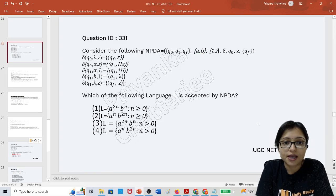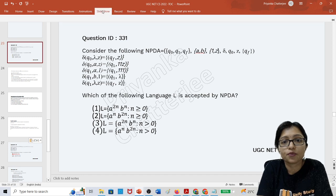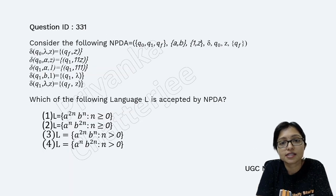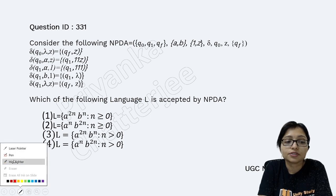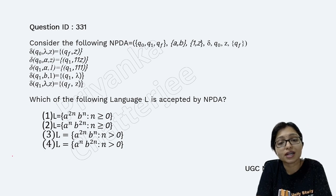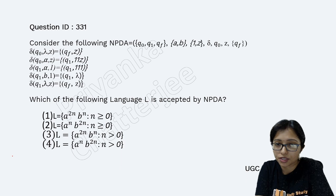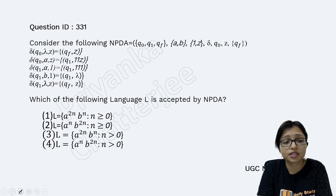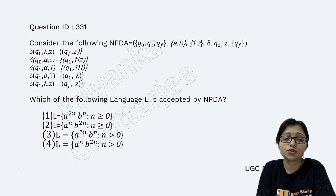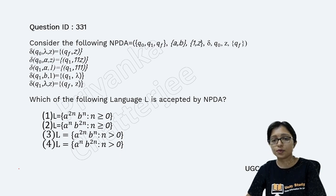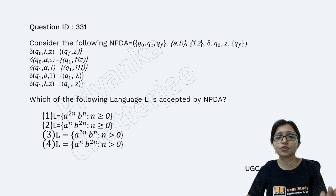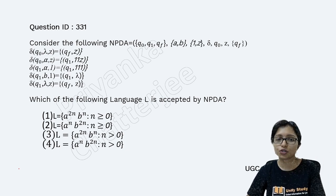In this video I am going to discuss this type of question. In this type of question they are asking that a NPDA or PDA will be given to you and after that you have to identify what type of language will be accepted. Students are getting confused here because the concept is not clear, so I will explain in an easy way and after watching this video there will be no confusion in push down automata.